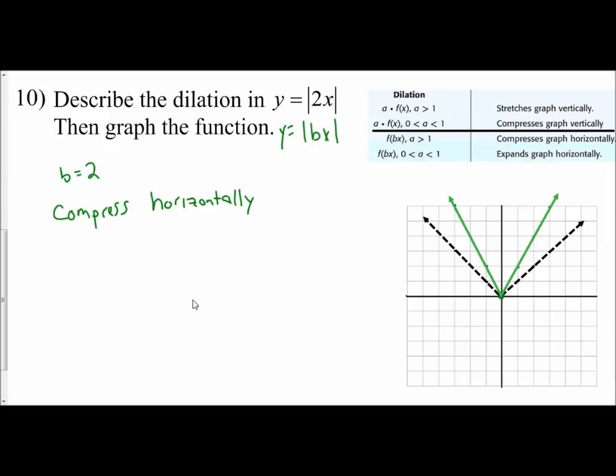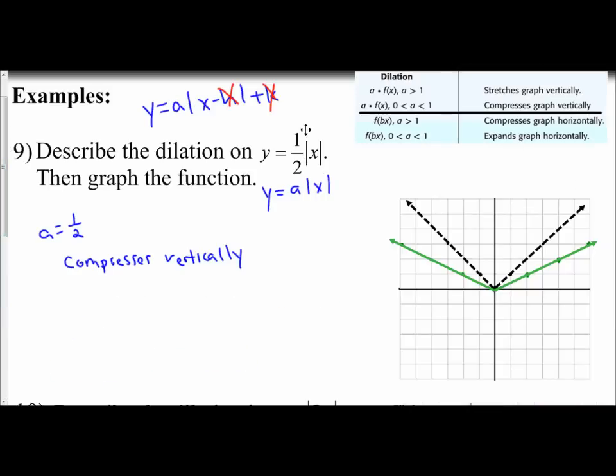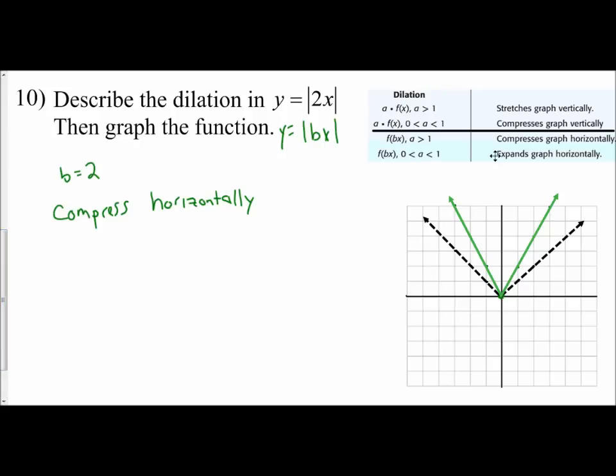Please look over the chart for dilations. The rules are the same for quadratics. The a value, the coefficient outside the grouping symbol, deals with stretching or compressing vertically based on its size. The b value, the coefficient inside the grouping symbol, is your horizontal dilation, either compressing or expanding horizontally based on the size.